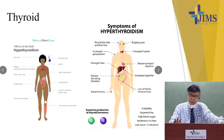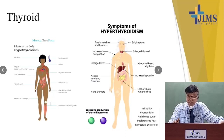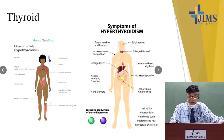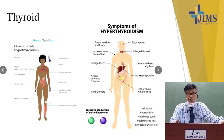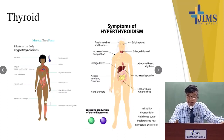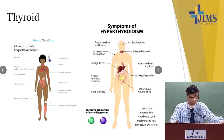Hyperthyroidism usually presents with bulging eyes, fine brittle hair and hair loss, increased perspiration, enlarged thyroid, enlarged liver, and abnormal heart rhythm — particularly atrial fibrillation in the elderly. Any elderly patient with atrial fibrillation or high heart rate, please think of hyperthyroidism. Other features include increased appetite, loss of libido, hand tremor, and particularly hand sweating; warm hands are a very important sign of hyperthyroidism.